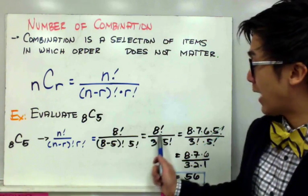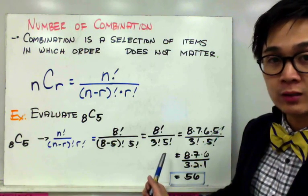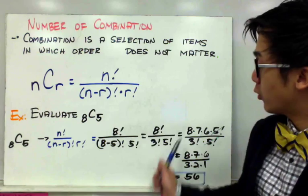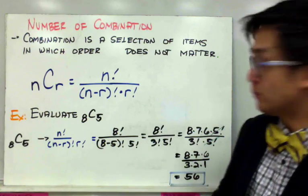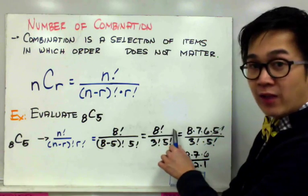By simplifying your expression, you'll have 8 factorial over 3 factorial times 5 factorial. To simplify the factorial notation, I'm going to expand 8 down to 5 factorial.